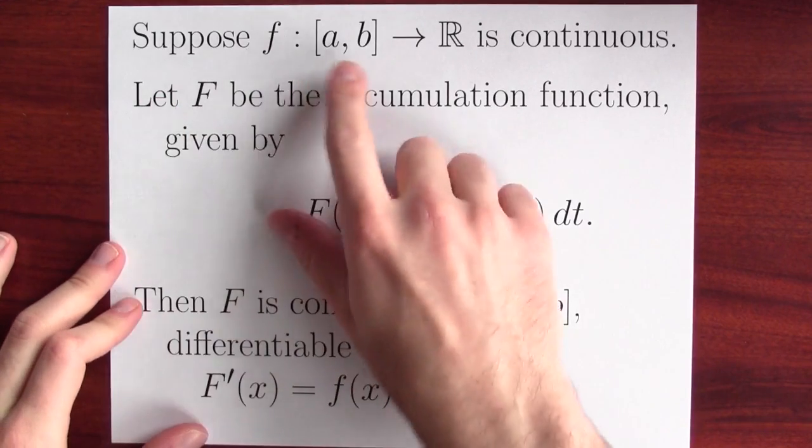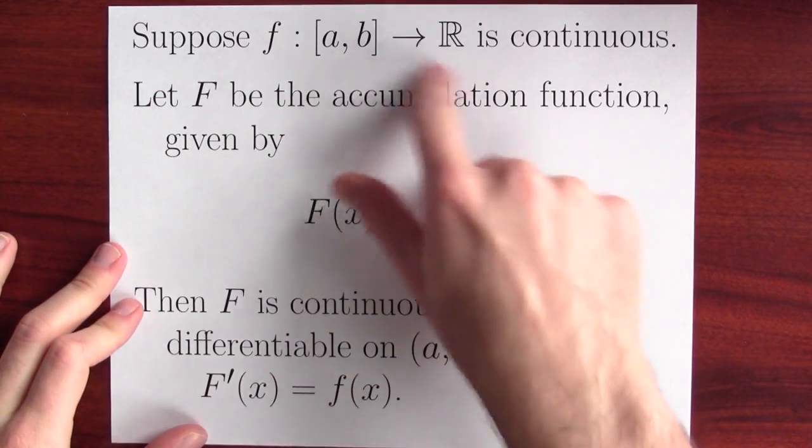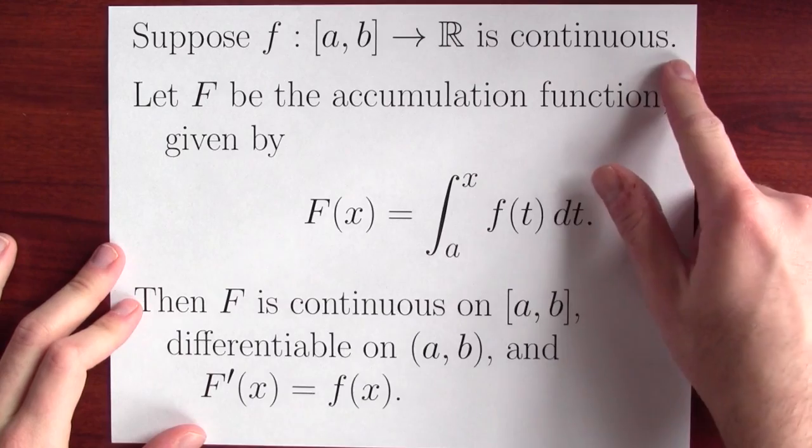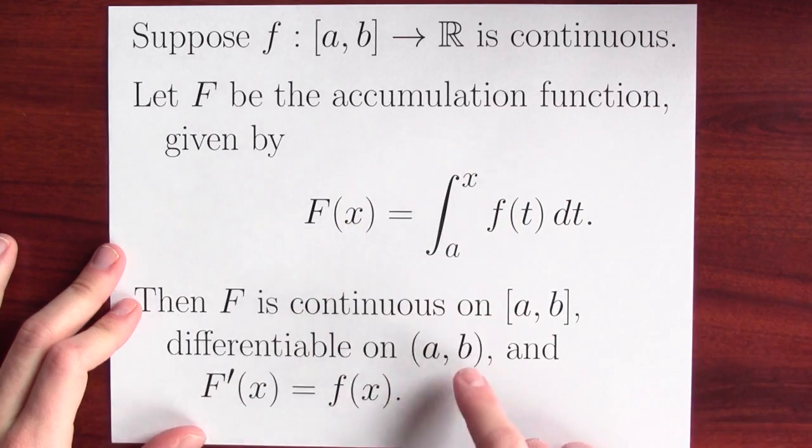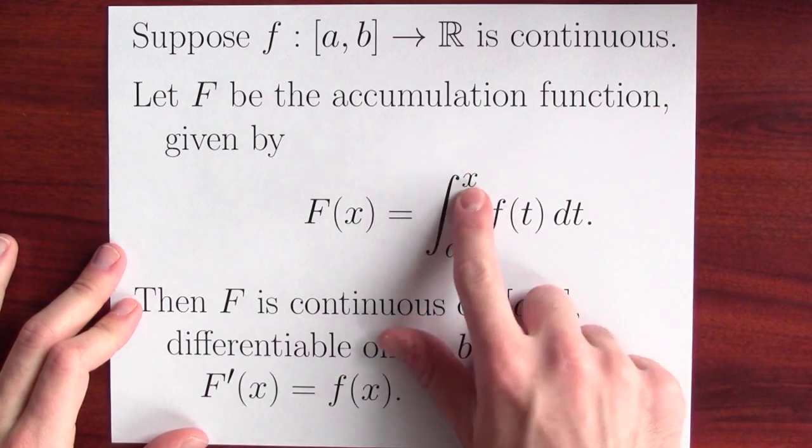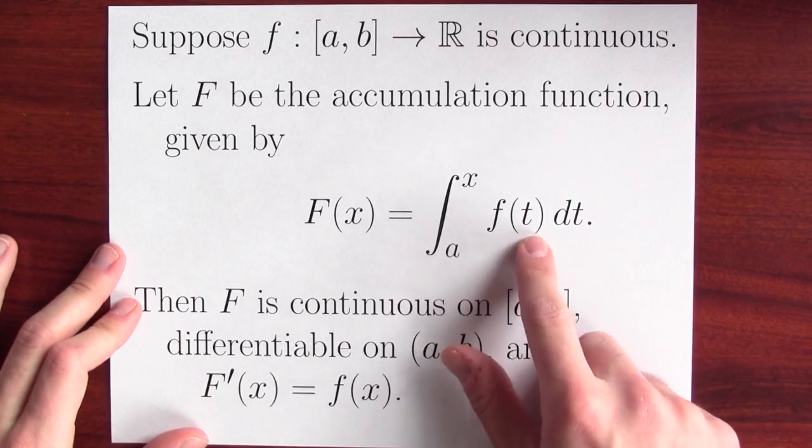I want to begin with a statement of the fundamental theorem of calculus. Suppose the function little f from the closed interval [a, b] to the real numbers is a continuous function. Let's define the function big F to be the accumulation function. That's the integral from a to x of the function little f.